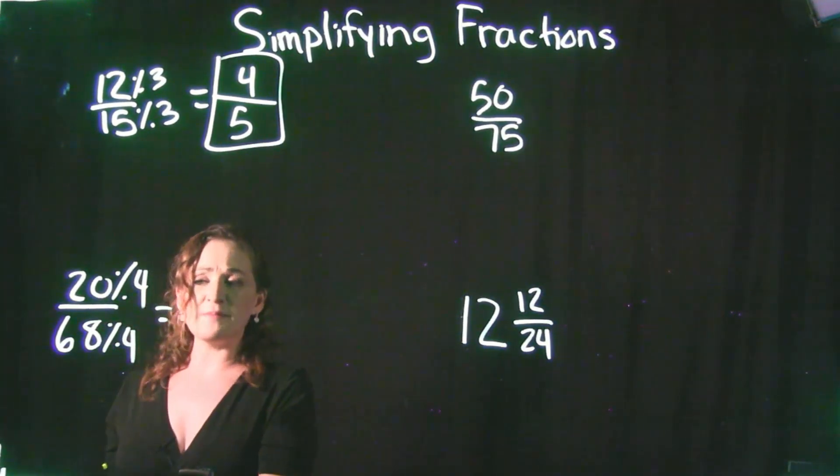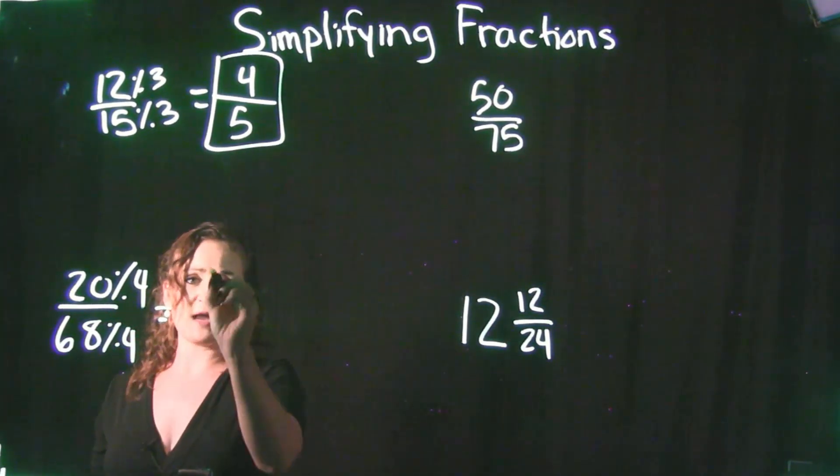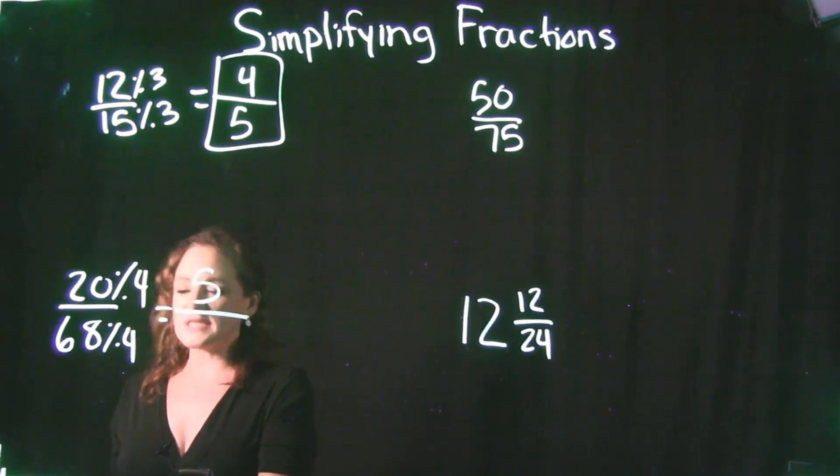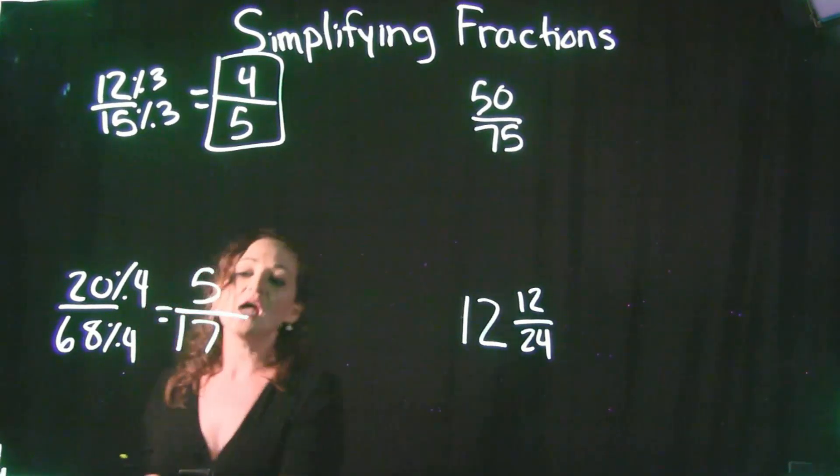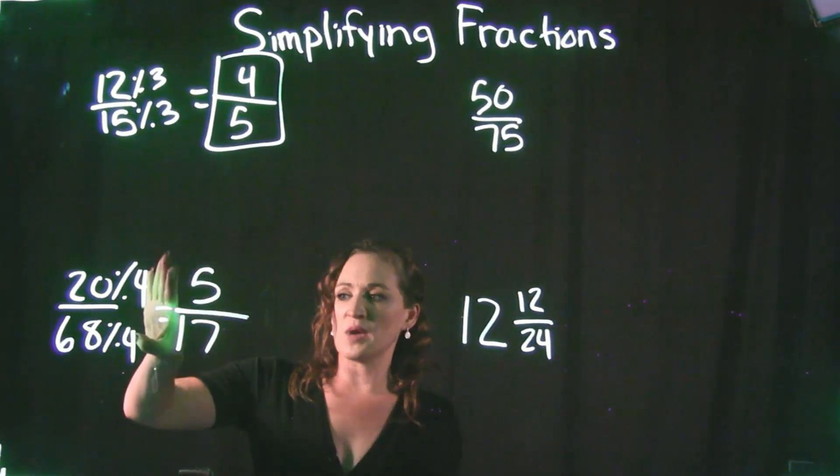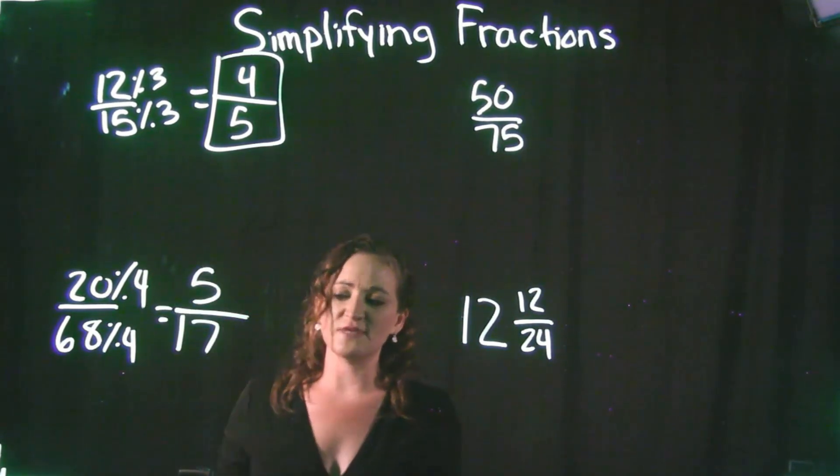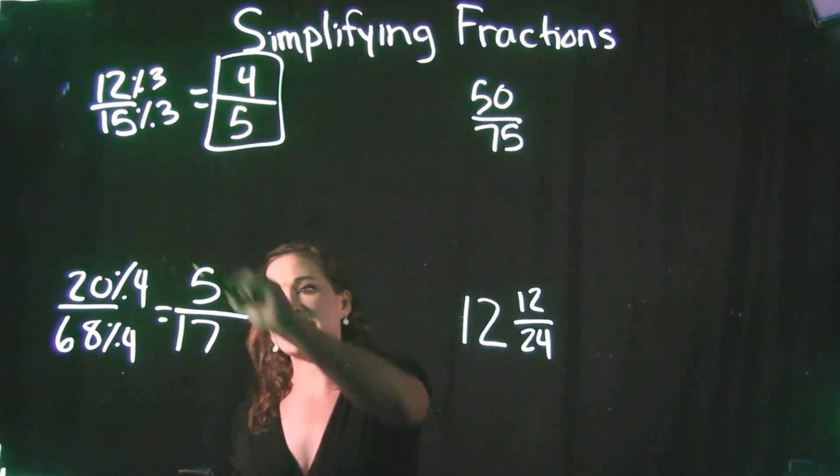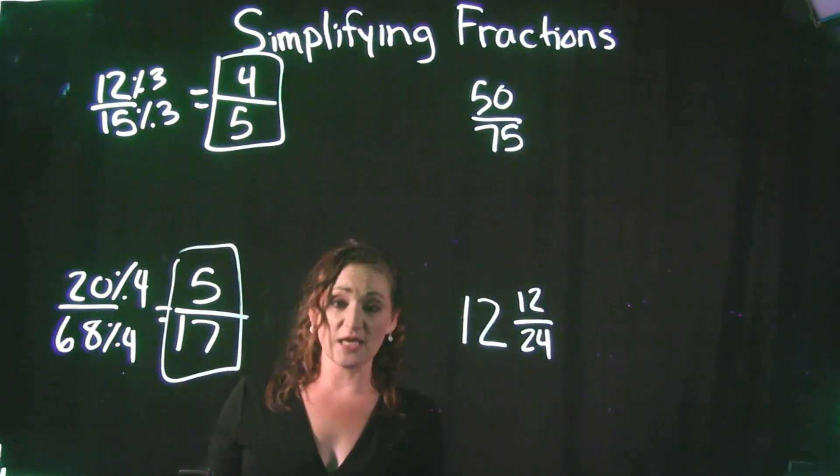So if I divide my numerator by a 4, 20 divided by 4 is a 5. And if I do 68 divided by 4, 68 divided by 4 is a 17. So if I look at my new numerator and denominator, I have a 5 over 17. 5 does not have anything in common with a 17. So I'm actually done here.